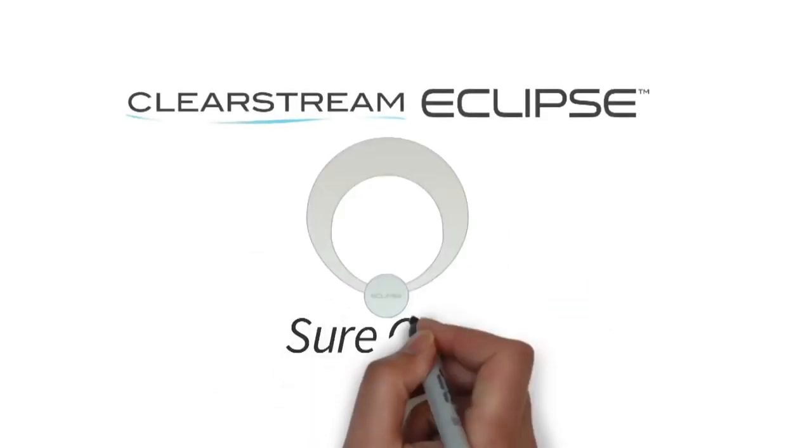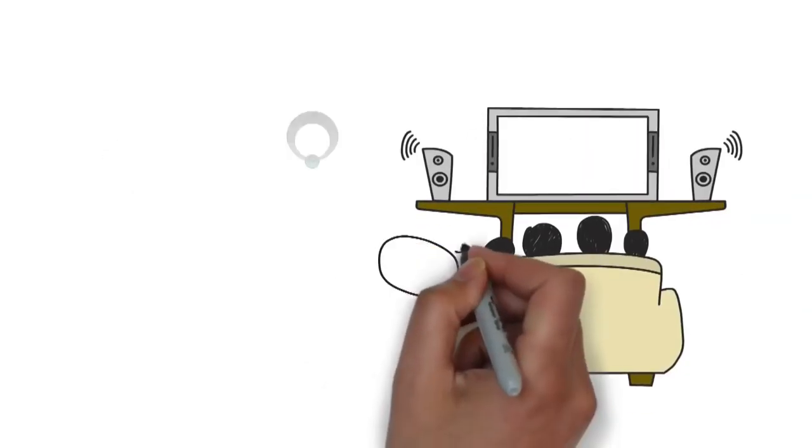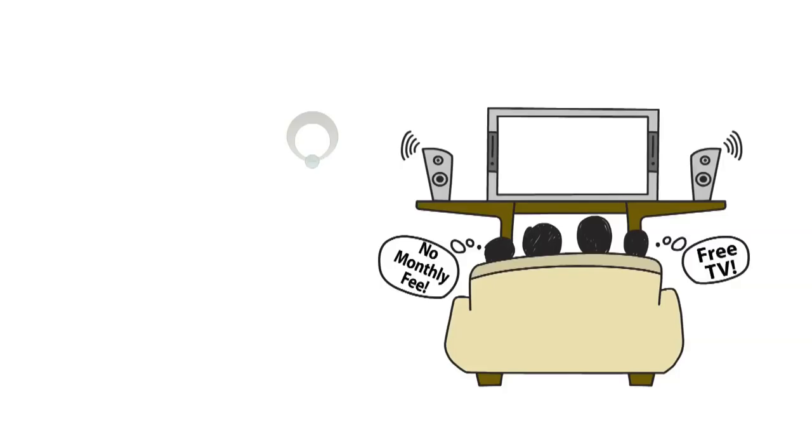This is definitely not your parents' TV antenna. Introducing the Clearstream Eclipse with SureGrip from Antennas Direct. This powerful antenna delivers the most stunning high-definition broadcast TV with no monthly fee.